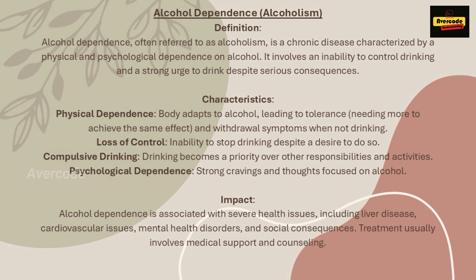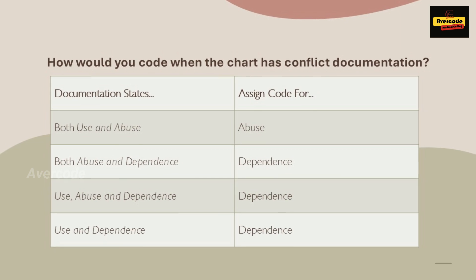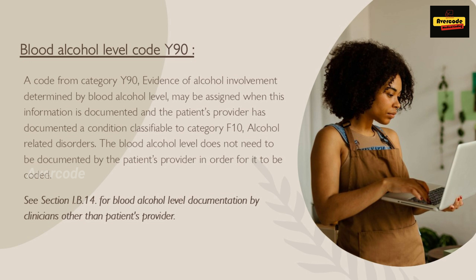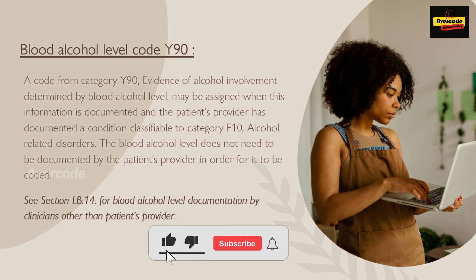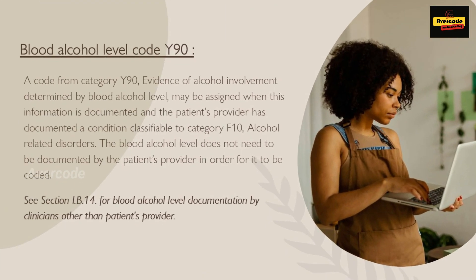Each level requires specific documentation and medical coding to ensure accuracy in patient records. How would you code when the chart has conflicting documentation? Follow the table for clarification. A code from Category Y90, evidence of alcohol involvement determined by blood alcohol level, can be assigned when there's documentation of a blood alcohol level and the provider has noted a condition classifiable under Category F10, alcohol-related disorders. Importantly, the provider does not need to document the actual blood alcohol level — it simply needs to be present in the documentation for coding purposes. This enables coding for alcohol involvement even if the provider hasn't directly recorded the blood alcohol concentration.